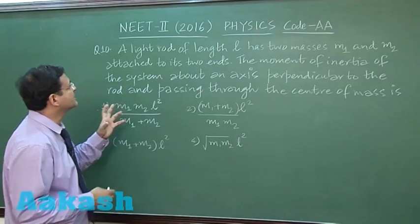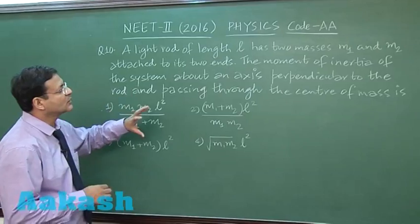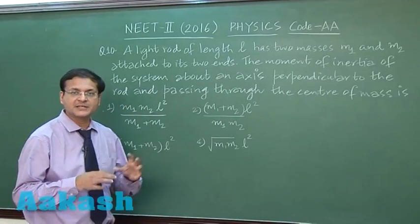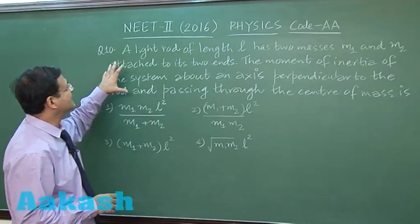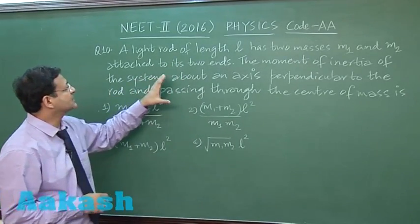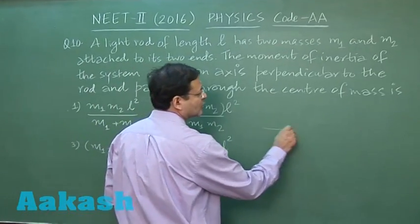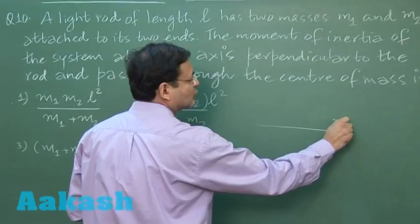Now once again this question is from the same chapter - system of particles and rotational motion. Here you are using the concept of moment of inertia as well as the center of mass. It says that a light rod of length L has 2 masses M1 and M2 attached to its 2 ends. So it is something like you have a rod and M1, M2 they are attached.